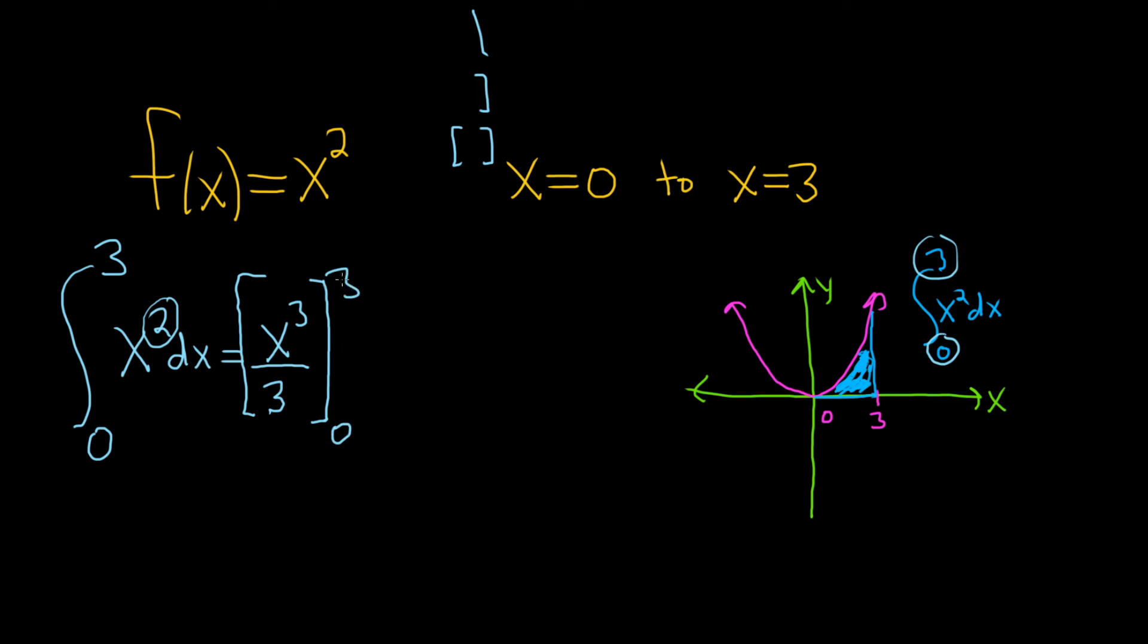Then you plug in the top number first. So this is equal to 3 cubed over 3. Then you subtract, and then you plug in the bottom number, so 0 cubed over 3.